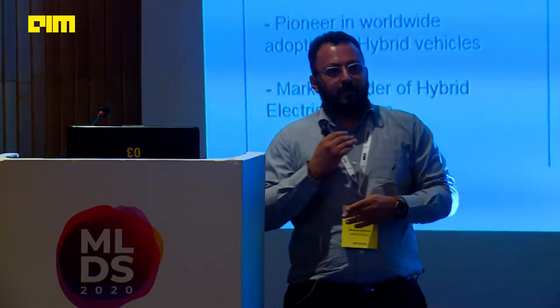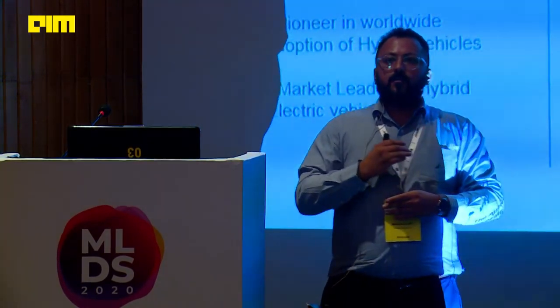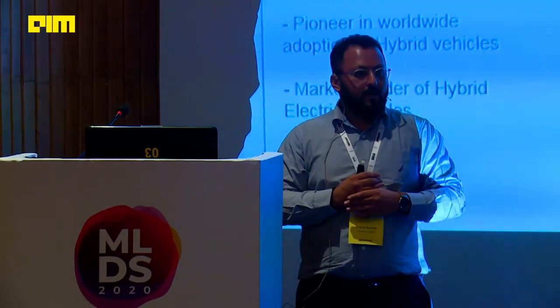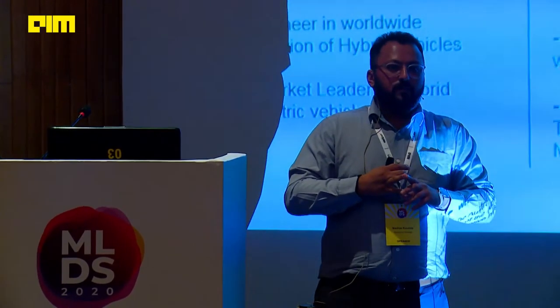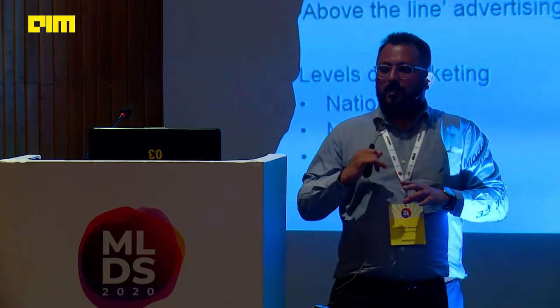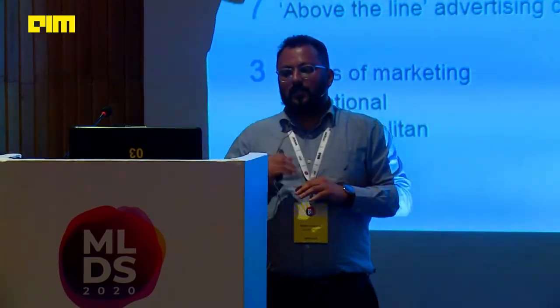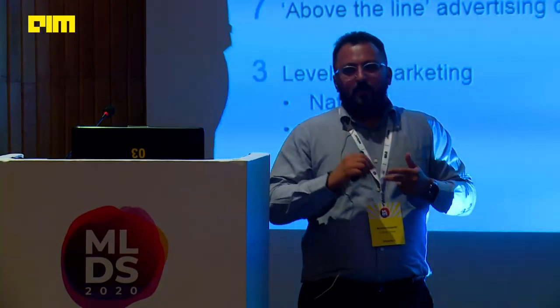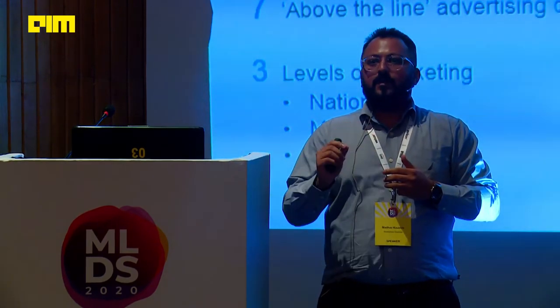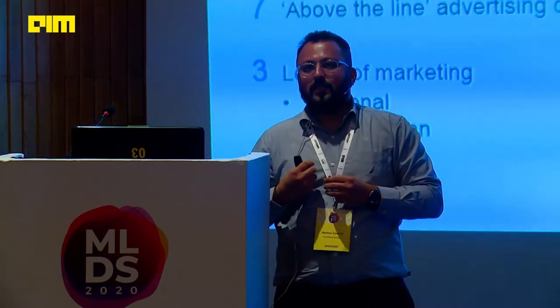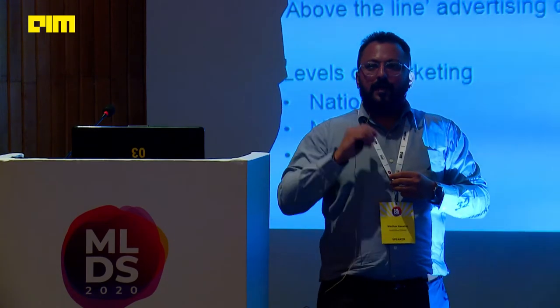Coming back to our business problem: there is the Australian subsidiary of Toyota. They were trying to figure out an optimization budget for their marketing ROI for their car brand Corolla. They had done marketing across different channels including traditional media. They had about 32 months of time span data, 15 marketing measures, seven ATL marketing variables, and three levels of geographic segments: national, regional, and metropolitan. This increases complexity because the same channel can have different impact at each geographic level.